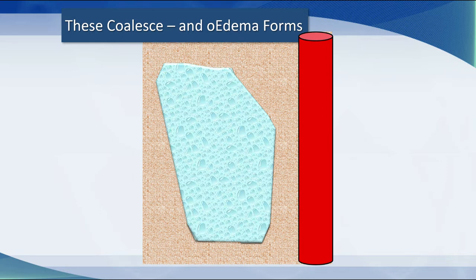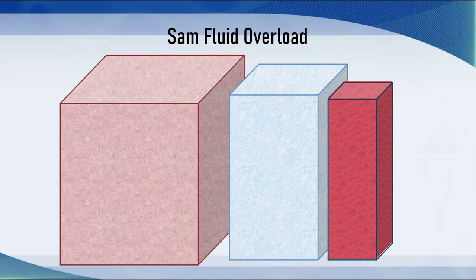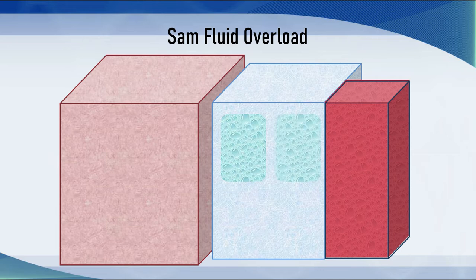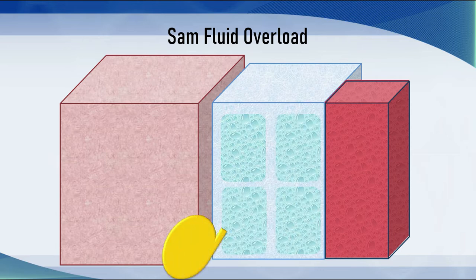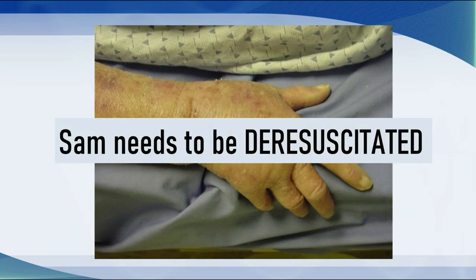We call that pitting edema. What has happened to Sam is that he has developed a huge amount of volume overload, so his extravascular space has become very edematous and full of liquid. When that starts to break through the skin, he begins to leak extracellular liquid, which is full of albumin and other proteins — that's why it's yellow in the bed. Sam now needs to be de-resuscitated. If this cannot be achieved using diuretic agents, he will need hemofiltration or renal replacement therapy.